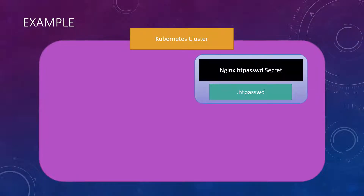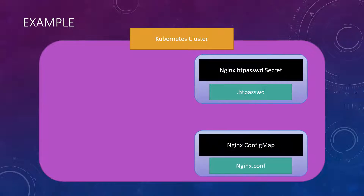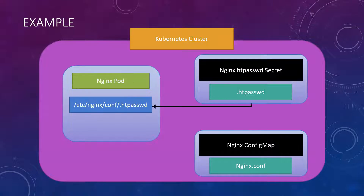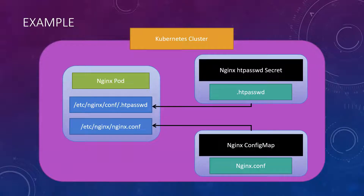The first step is to create an htpasswd file from the htpasswd command, then create a Kubernetes secret from that. htpasswd helps us create a username and password in encrypted format for nginx, Apache, or other web servers. Once the secret is created, we'll create an nginx ConfigMap, and then create the nginx pod mounting both the htpasswd file from the secret and the configuration file from the ConfigMap.